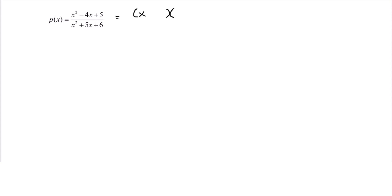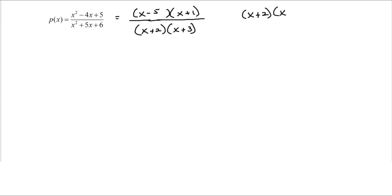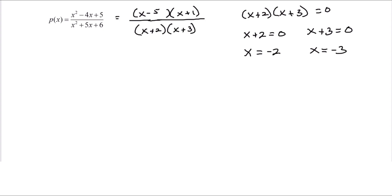To find the vertical asymptotes here, we start by factoring the top and the bottom. We get x minus 5 and x plus 1 in the numerator, and x plus 2 and x plus 3 in the denominator. None of those factors reduce or cancel because we have nothing in common between the top and the bottom. Setting the factored denominator equal to zero and solving gives x equals negative 2 and x equals negative 3. These are both vertical asymptotes.